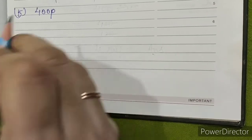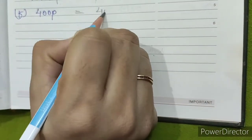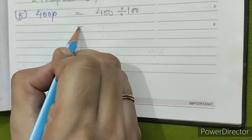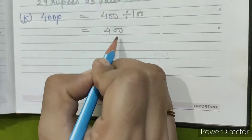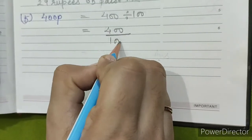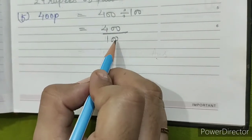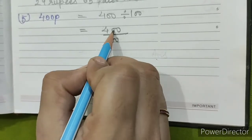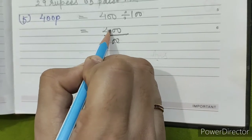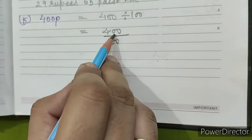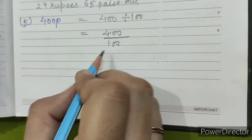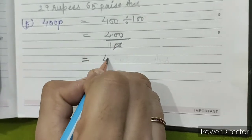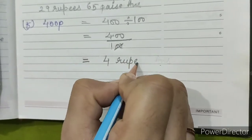F. 400 paise. We'll write 400 ÷ 100. Count how many zeros are in 100 — 1, 2 — and put the decimal between 4 and 0. Our answer is 4 rupees.